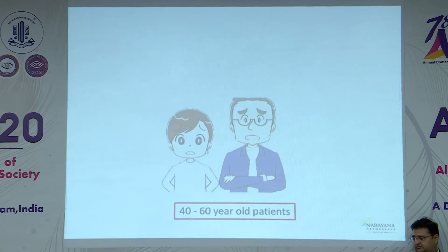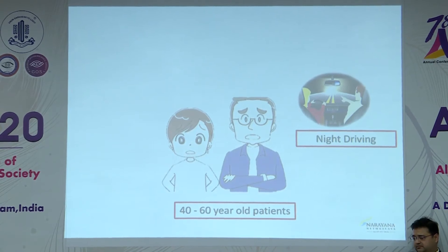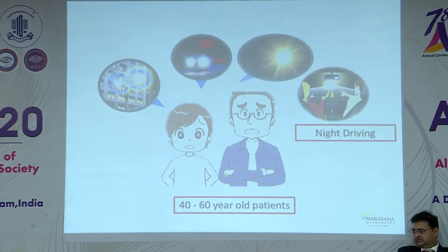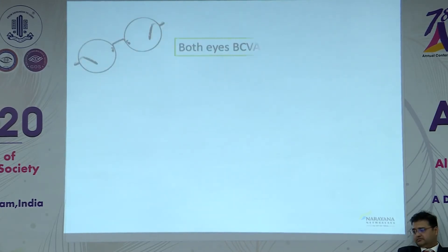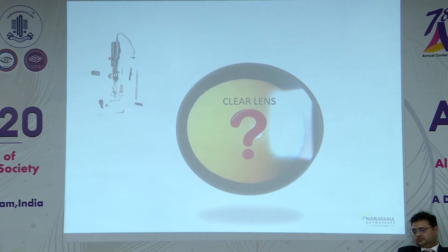We often experience 40 to 60-year-old patients walking into our OPD complaining of night driving difficulties, halos, glare, and starbursts. When we examine these patients, most have best corrected visual acuity of 20/20 N6. When we examine their lens, most again have clear lenses, but still they report halos, glare, and starbursts.